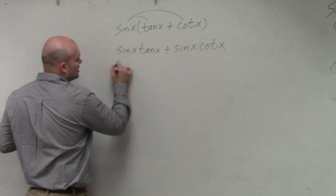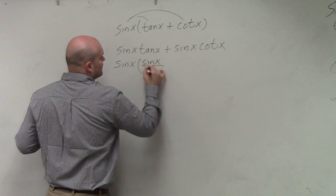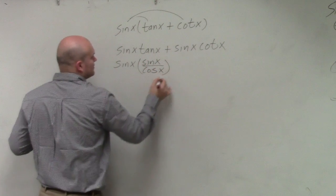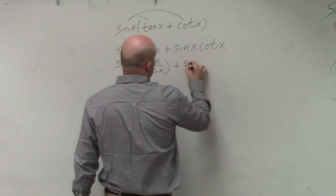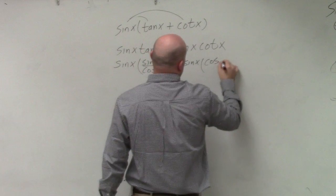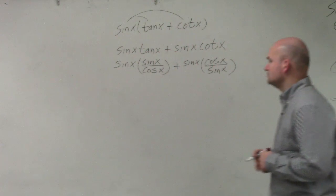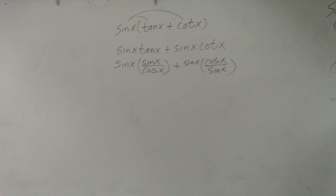So sine is already written like that. Tangent is sine of x over cosine of x, plus sine of x times cotangent of x, which is cosine of x over sine of x. Does everybody see that?